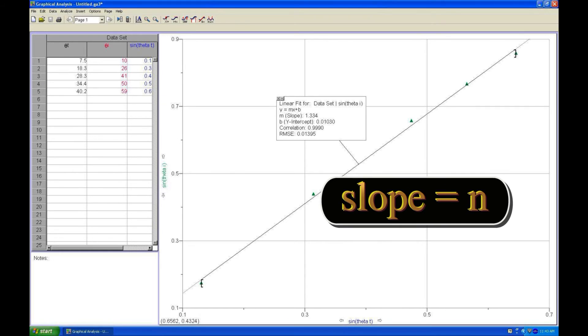Here is our plot of sine theta1 versus sine theta2. The slope may be compared with 1.33, the index of refraction of water.